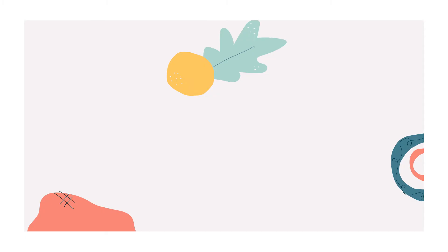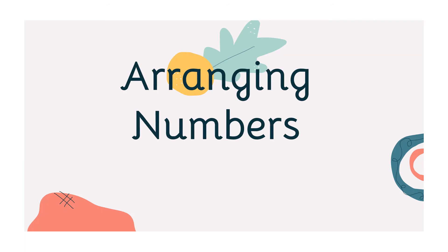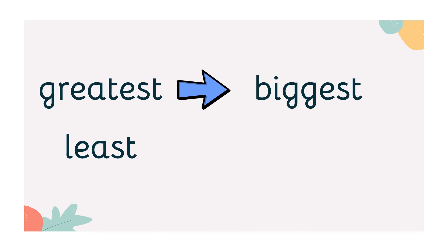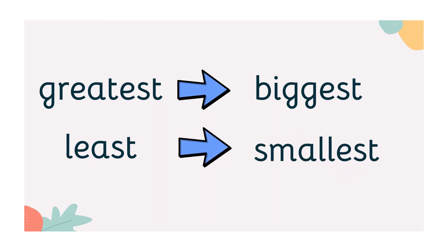Last time, kids, we learned how to arrange numbers from least to greatest. This time, we will be discussing arranging numbers from greatest to least. Let's first define greatest and least. When we say greatest number, this number has the biggest value. And when we say least, this number has the smallest value. So, when we arrange numbers from greatest to least, always remember that the numbers are decreasing.